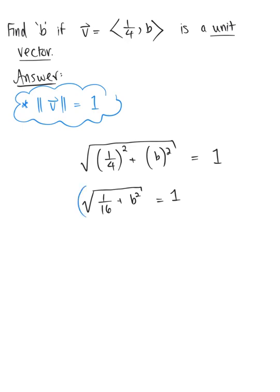So now if we go ahead and we square both sides of our equation, we can remove that square root, leaving us with 1/16 plus b squared is equal to 1. So then subtracting that 1/16 from both sides, we have b squared is equal to 1 minus 1/16.